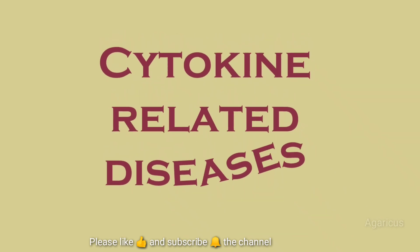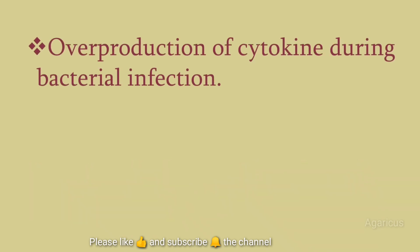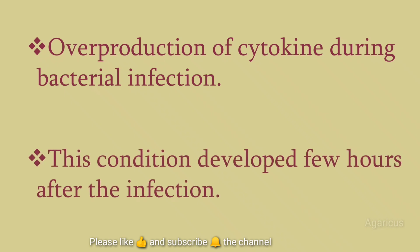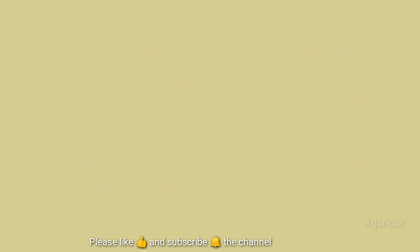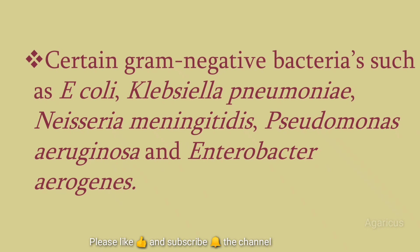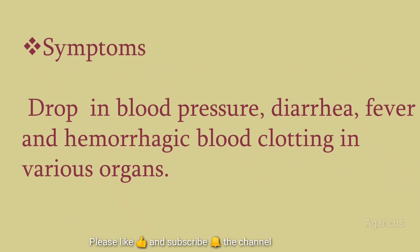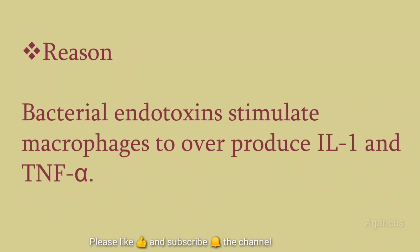Next we are discussing cytokine-related diseases. The first one is bacterial septic shock, caused by overproduction of cytokines during bacterial infection. This condition develops a few hours after infection. Certain gram-negative bacteria such as E. coli, Klebsiella pneumoniae, Neisseria meningitidis, Pseudomonas aeruginosa, and Enterobacter aerogenes cause this disease. Symptoms include drop in blood pressure, diarrhea, fever, and hemorrhagic blood clotting in various organs. The reason is that bacterial endotoxins stimulate macrophages to overproduce interleukin-1 and tumor necrosis factor alpha.